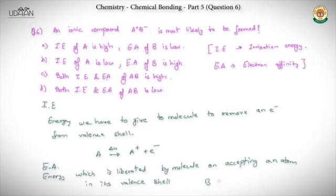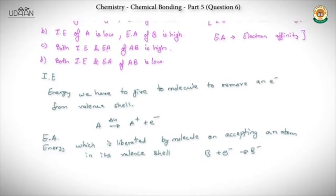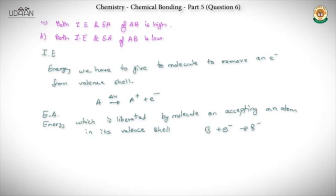So basically when we have B and we add an electron to convert it into an anion B⁻, the energy that is liberated is called electron affinity — not activation energy, I'm sorry for the confusion. Activation energy is something different. So: ionization energy is the energy we have to give, and electron affinity is the energy that is released.